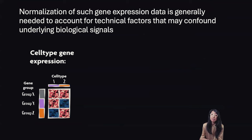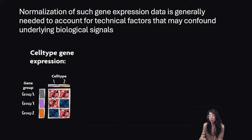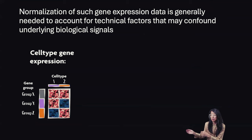For example, consider if we, in our hypothetical omniscience, know there to be two cell types — cell type 1 and cell type 2 — and we know these cell types are quite similar in their expression of group X genes. These are maybe housekeeping genes, for example. But they're very different in their expression of group Y and group Z genes, which may be genes that confer cell type-specific functions. There are also other genes that are not expressed in either cell type, so we don't show those.